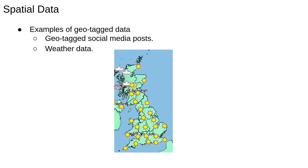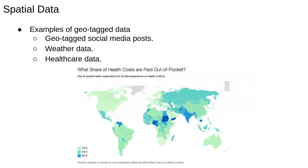Weather data is obviously another type of spatial data that you might encounter. Lots of other data can have a spatial component. For example, this map shows World Bank data on the total expenditure on healthcare paid for out of pocket. By computing the same statistic in many countries, we generate a spatial data set.